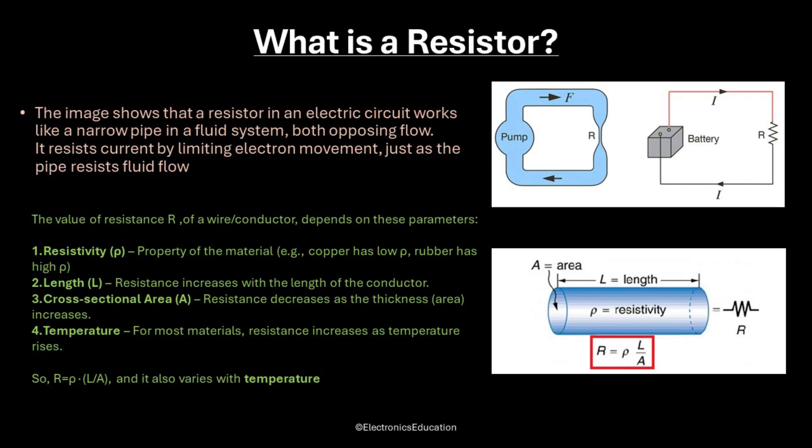Three, cross-sectional area A — resistance decreases as the thickness increases. And four, temperature — for most materials, resistance increases as temperature rises. So, R equals rho times L divided by A, and it also varies with temperature.